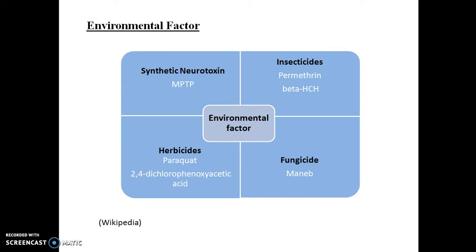The environmental factor includes the synthetic neurotoxin MPTP (N-methyl-4-phenyl-1,2,3,6-tetrahydropyridine). Heroin-consuming persons are more prone to Parkinson's disease because heroin can be contaminated with synthetic neurotoxins. MPTP is converted into MPP+ free radicals by the enzyme monoamine oxidase B. These free radicals have a high affinity for dopaminergic neurons in the nigrostriatal pathway, causing neurodegeneration and leading to Parkinson's disease.